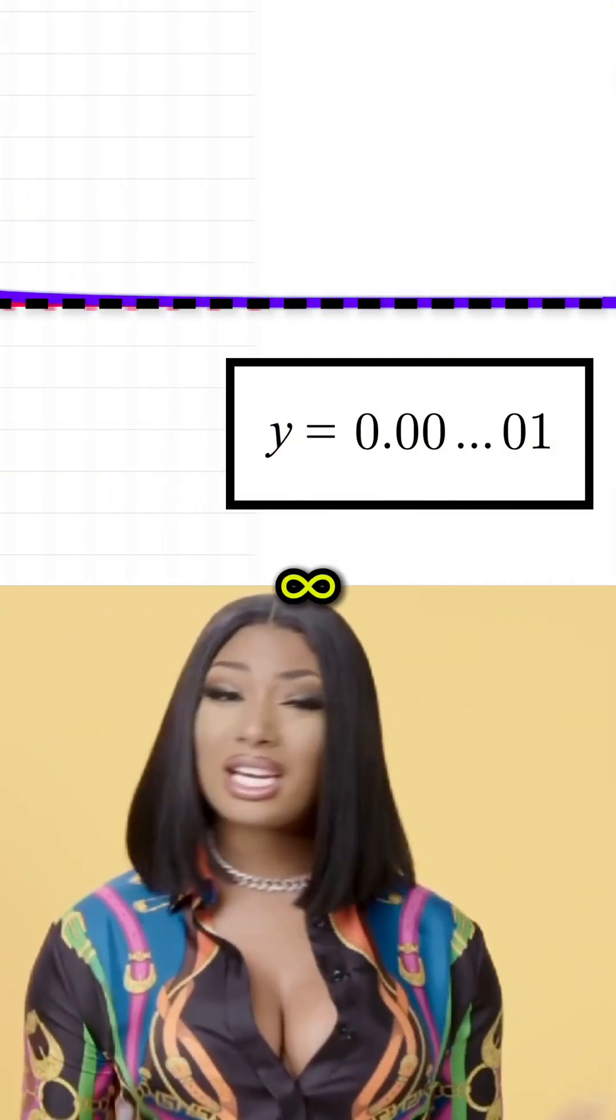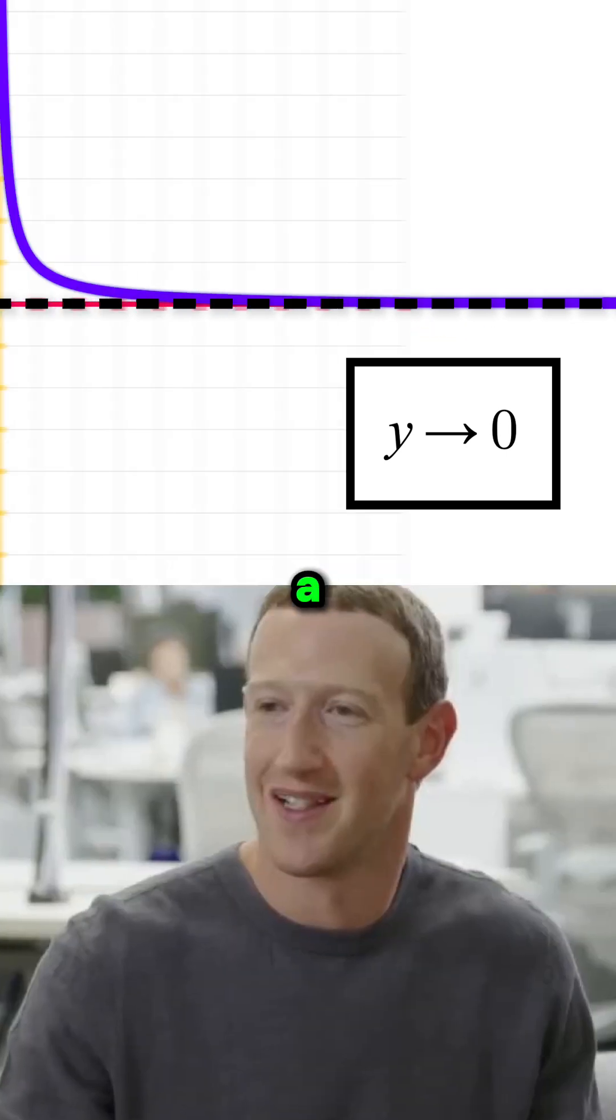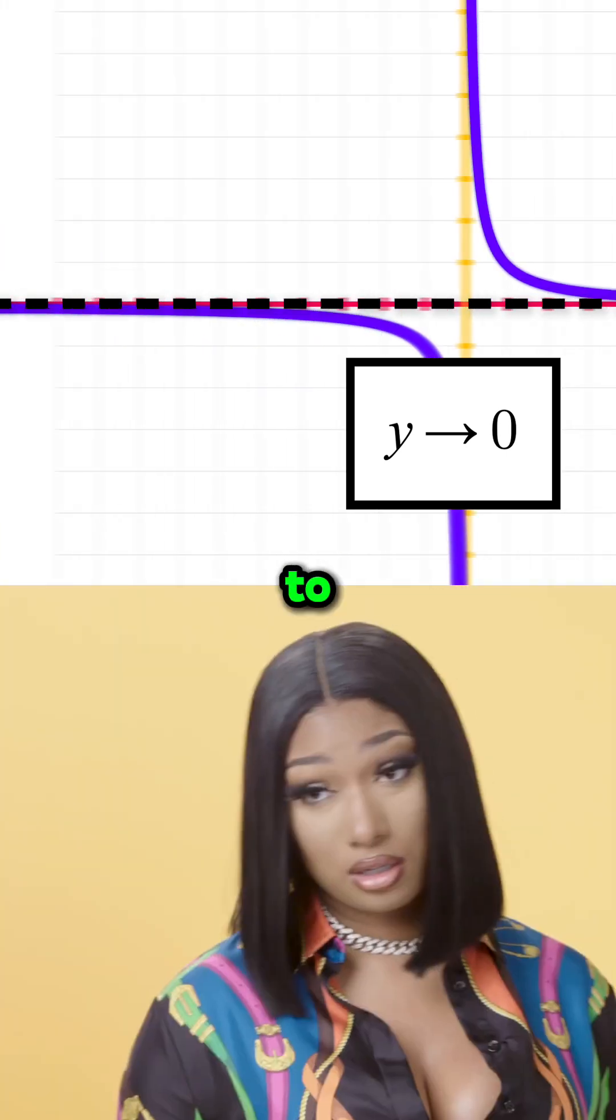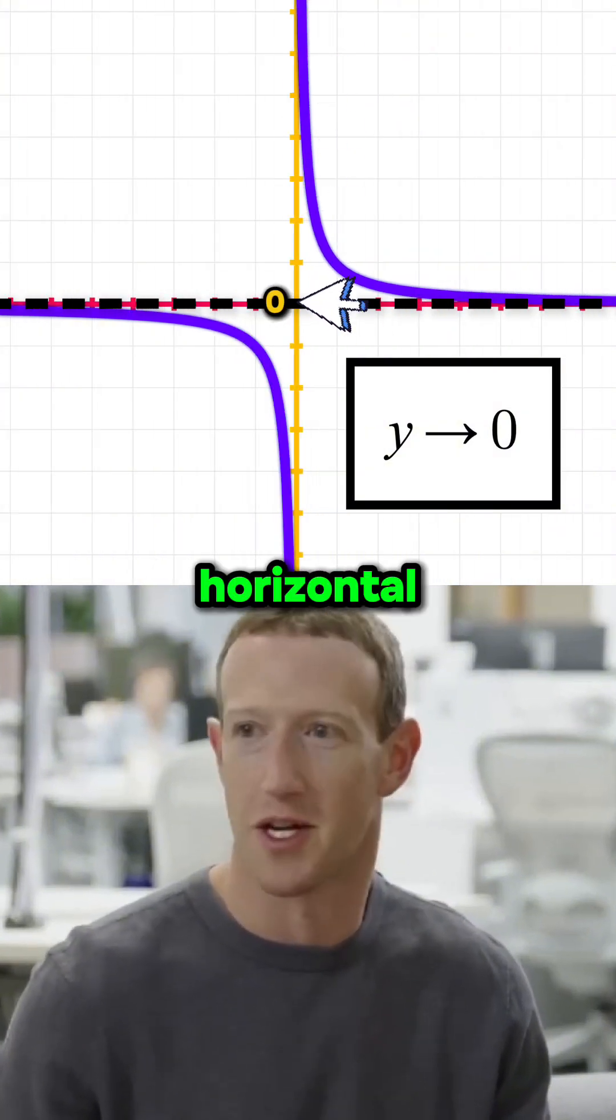So basically as x goes towards infinity, y will get hella close to being 0, but never actually get there. And a similar thing happens as x goes off to minus infinity. That's how we know this line where y equals 0 is a horizontal asymptote.